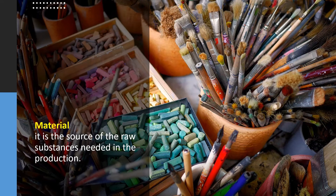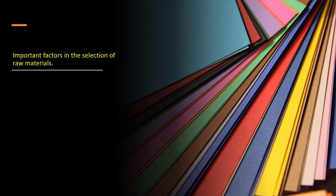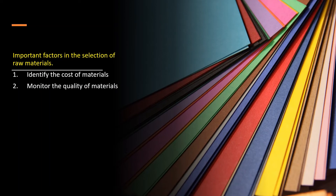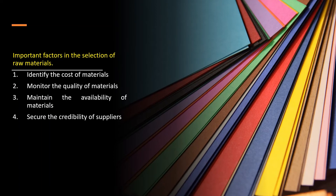After identifying the different materials needed to produce your product, you are now ready to convert raw materials into the final product until it reaches the customer. The entrepreneur may consider the following important factors in the selection of raw materials: 1. Identify the cost of materials. 2. Monitor the quality of materials. 3. Maintain the availability of materials. 4. Secure the credibility of suppliers. 5. Determine the waste that the raw materials may produce.